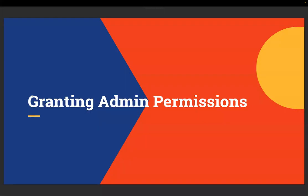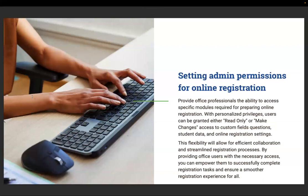Granting admin permissions. Provide office professionals the ability to access specific modules required for preparing online registration. With personalized privileges, users can be granted either read only or make changes access to custom field questions, student data, and online registration settings. This flexibility will allow for efficient collaboration and a streamlined registration process. By providing office users with the necessary access, you can empower them to successfully complete registration tasks and ensure a smoother registration experience for all.